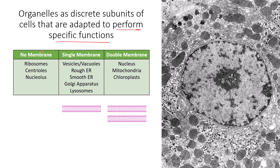Within a eukaryotic cell there is a variety of structures. Three structures — ribosomes, centrioles, and the nucleolus — do not have their own membrane; they have a specific function but no membrane. Five structures have a single membrane: vesicles and vacuoles, the rough ER, smooth ER, Golgi apparatus, and lysosomes. Then there are structures like the nucleus, mitochondria, and chloroplast that have two membranes.